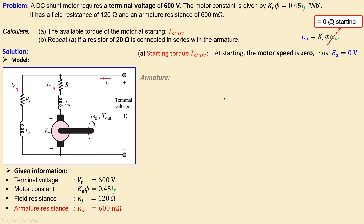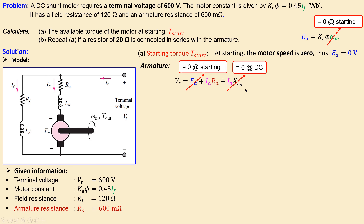Looking at the armature part, we can set up an equation using Kirchhoff's voltage law. The terminal voltage is across the armature resistor, the inductor, and the back EMF. Since we are working in a DC system, the reactance of inductor LA is zero, and the back EMF is zero at start. So the armature current simplifies to the terminal voltage divided by the armature resistance: 600 over 0.600 ohms, which gives 1000 amperes.